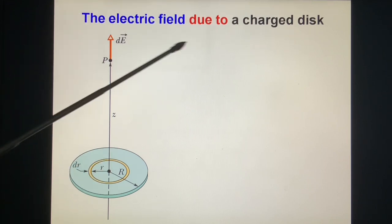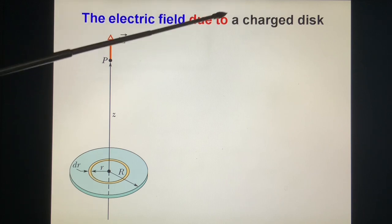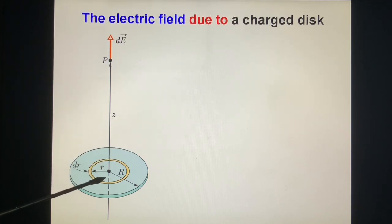We can look at the charged disk is composed of many rings with a center overlap to that of a charged disk and their radius vary from zero up to capital R.